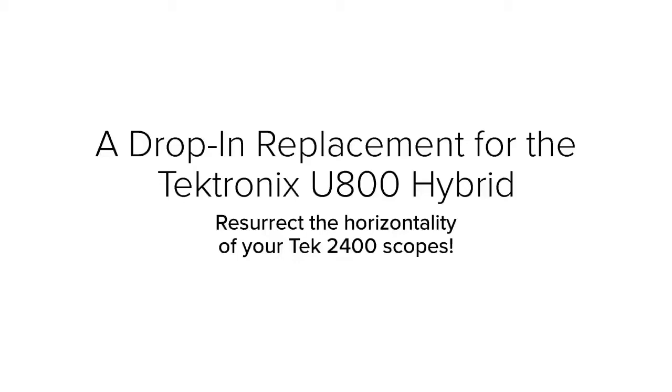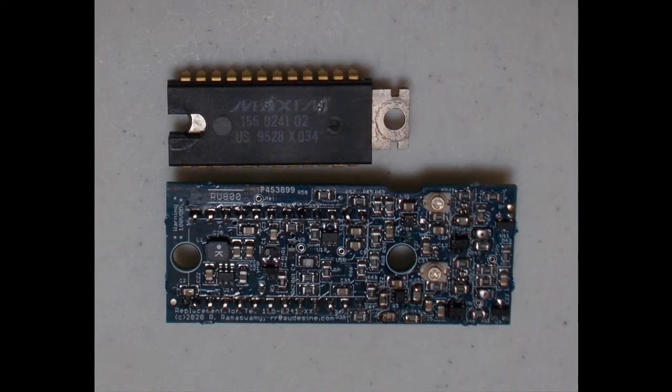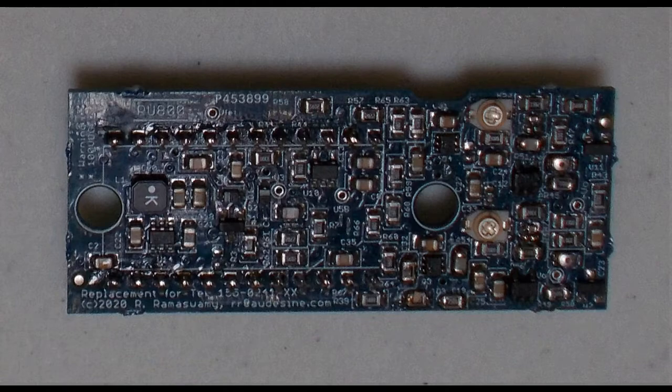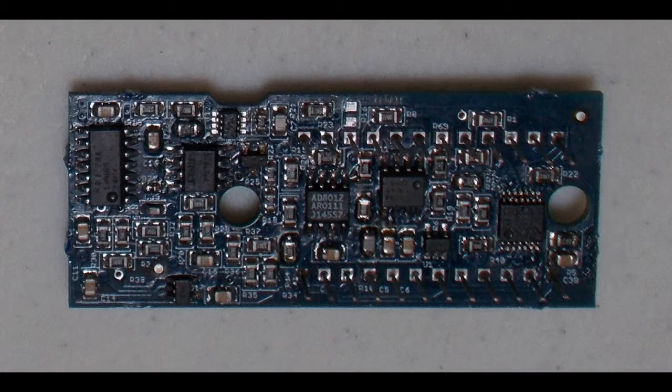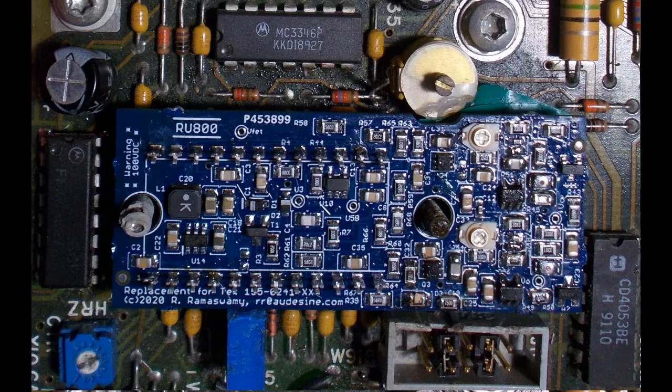Hello everyone. The RU800 is a drop-in replacement for the Tektronix U800 hybrid integrated circuit found on the Tektronix 2400 series oscilloscopes. The blue PCB you see in these pictures is the version being made available for sale. The video that follows will demonstrate the performance of the RU800 taken with an earlier prototype, the green PCB.